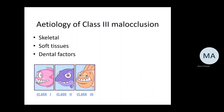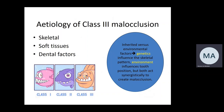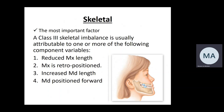The etiology of class three malocclusion is mainly skeletal. There are some soft tissue and dental factors, but they rarely contribute purely to the etiology. Both inherited/genetic and environmental factors play a role, but for class three malocclusions it's mainly genetics. The skeletal etiological factors may include: the maxilla being reduced in length, contributing to a retrognathic pattern; or the maxilla being of normal length but positioned more posteriorly, again contributing to a retrognathic position.